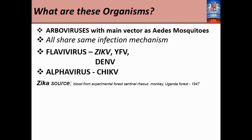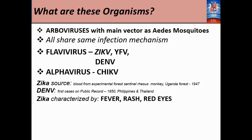The source of Zika virus is from the blood of an experimental forest sentinel rhesus monkey in Uganda in 1947, and dengue's first case on public record was in 1950 in the Philippines and Thailand.